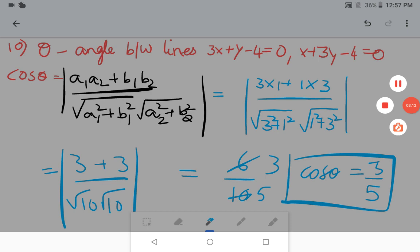Now in the 15th question, L1 is equal to 0 and L2 is equal to 0. They are perpendicular. Then what is the correct condition? So that is option C. A1 into A2 plus B1 into B2 will be equal to 0. This is the correct condition required to satisfy.